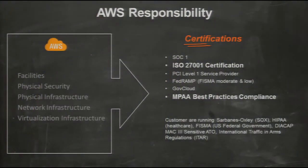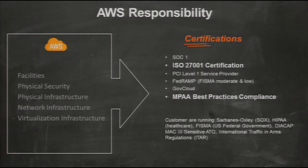AWS's responsibility — the physical infrastructure security — has already gone through different audits and compliance certifications. For example: the SAS 70 SOC 1 audit, ISO 27001 certification, PCI DSS Level 1 compliance, FedRAMP, GovCloud, and most recently the MPA best practices compliance with the help of our partner Code. All these certifications are managed by AWS on an ongoing basis, and there are thousands of customers running SOX-compliant, PCI-compliant, HIPAA-compliant, ITAR-compliant, and many other applications on AWS.